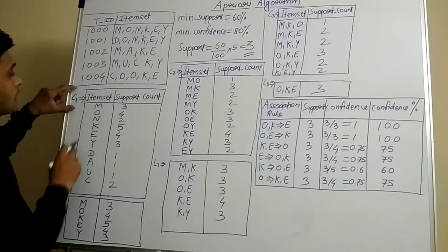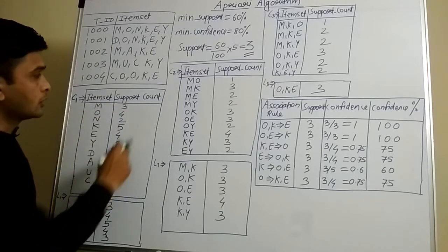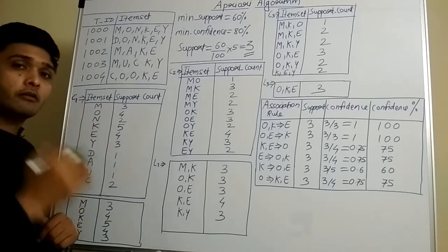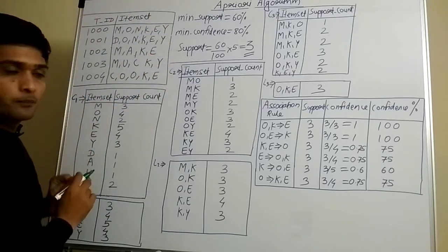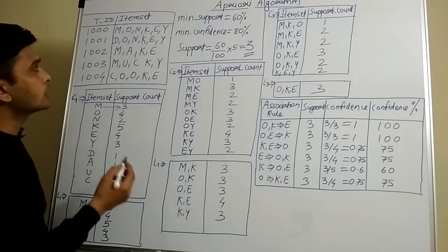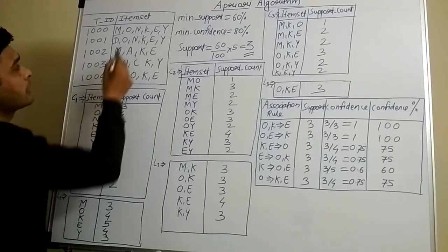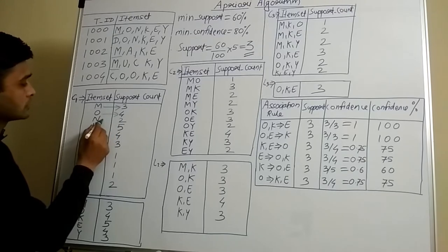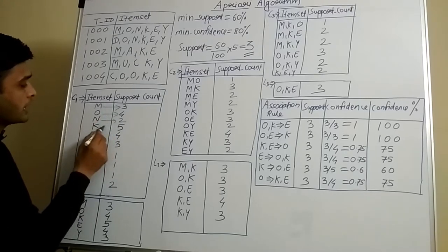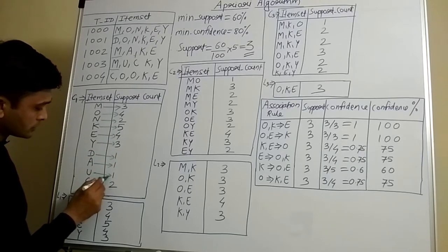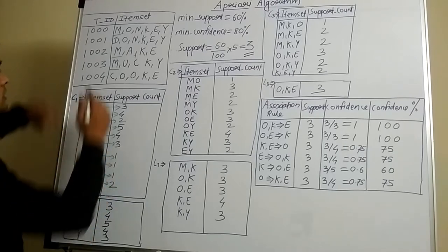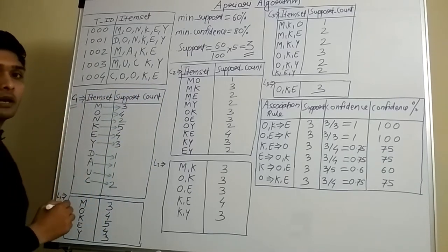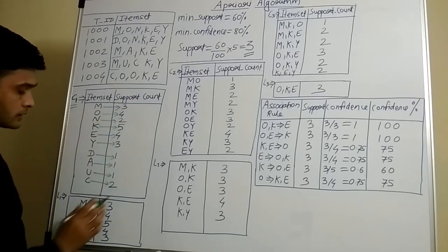The next step is to make a table called C1 with item set and support count. The support count is simply the number of times each particular item has occurred in the dataset. For example, item M has occurred 3 times — you can count it. Similarly, I have written the values for all other items. For example, item 2 has occurred 4 times. And at the end, item C has occurred 2 times. So count how many times each item occurred and write the counts in the C1 table.